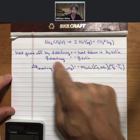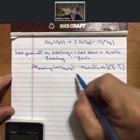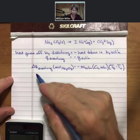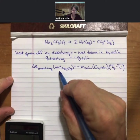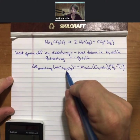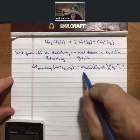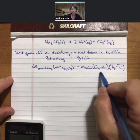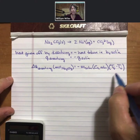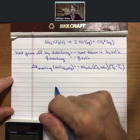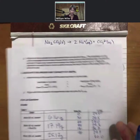So q of dissolving equals minus q solution. I've filled in the terms: delta H dissolving — that's our unknown — times moles of sodium carbonate on one side, and on the other side: mass of solution, specific heat capacity of the solution, and the temperature difference as T final minus T initial.